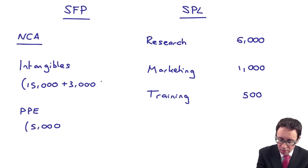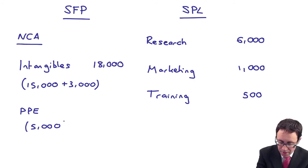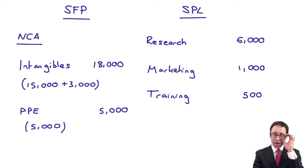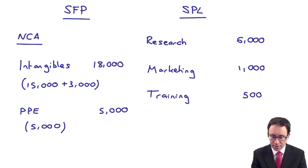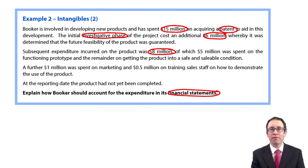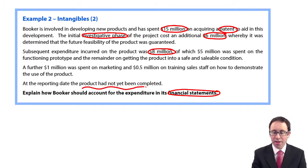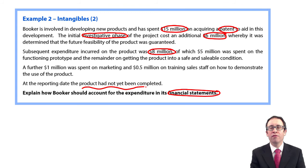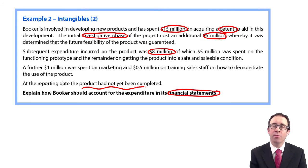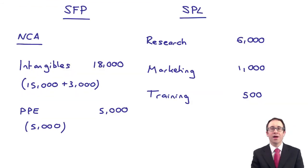When you finish it off, your intangibles are $18,000 and the PPE is $5,000. We've got no indication of what the useful life is, but it doesn't matter because the product had not yet been completed. Therefore, the PPE and the intangible are not yet ready for use, so they will not be depreciated and they will not be amortized. This year there is nil depreciation and nil amortization.